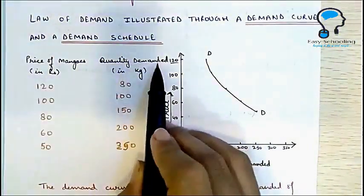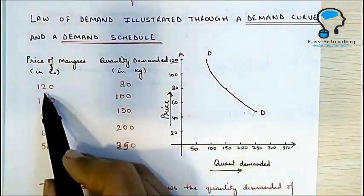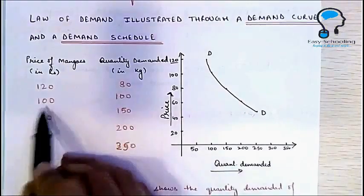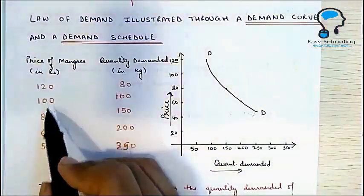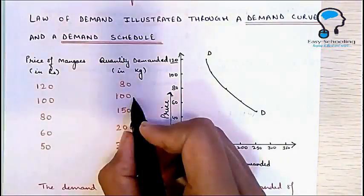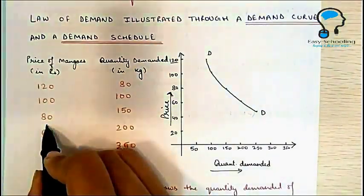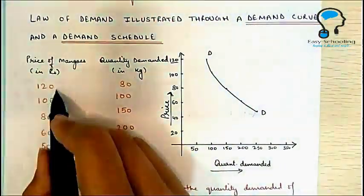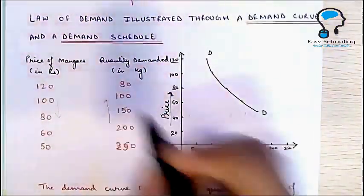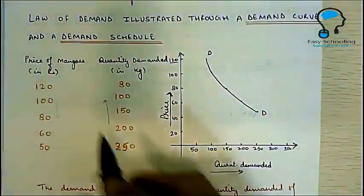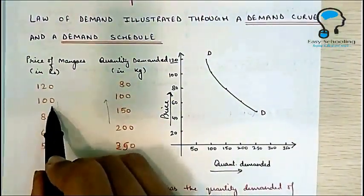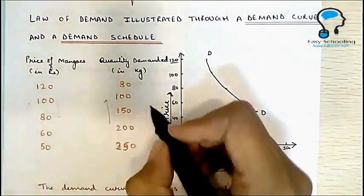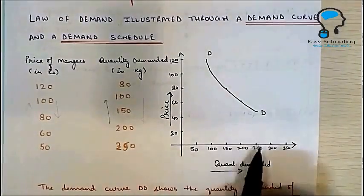Here I have the price of mangoes in rupees and quantity demanded of mangoes in kilograms. When the price of mangoes was 120 rupees per kg, the demand was 80 kg. When the price fell to 100 rupees, the demand increased to 200 kg. When the price falls to 80 rupees, the demand increases to 150 kg — so with a falling price there is an increase in demand of the commodity.